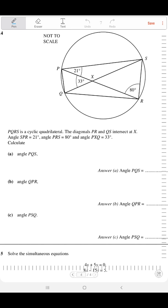PQRS is a cyclic quadrilateral. What's the meaning of cyclic quadrilateral? Each opposite angle adds up to 180. The diagonals PR and QS intersect at X. This does not mean that X is the center. Angle SPR equals 21 degrees.